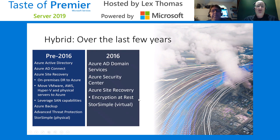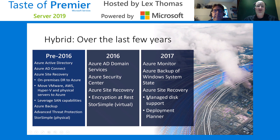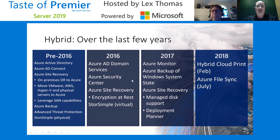As we get into 2016, we had Azure AD Domain Services and Azure Security Center, plus more improvements to Azure Site Recovery including encryption at rest, which was a huge improvement. Going forward into 2017, we started looking at Azure Monitor and backups of Windows System State, along with more improvements in Azure Site Recovery with disk support and a deployment planner. In 2018, we're really looking at hybrid cloud print — you can actually print from an Azure AD-joined device to your corporate printers — and we also have Azure File Sync.